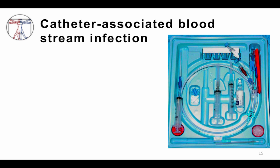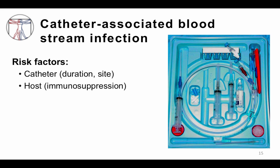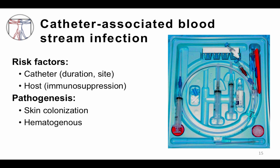Catheter-associated bloodstream infections occur when a central catheter — used to infuse medications that would damage peripheral veins and can remain in place for a long time — allows bacteria into the bloodstream. Risk factors include duration and site of the catheter: the longer the catheter is in, the higher the risk, and certain sites are higher risk than others. For example, a femoral vein catheter, where there are more bacteria, carries higher risk than a subclavian vein catheter. Immunosuppressed patients are at higher risk than immunocompetent patients.